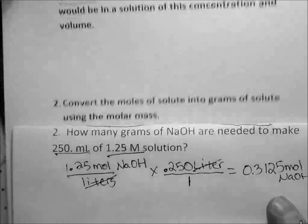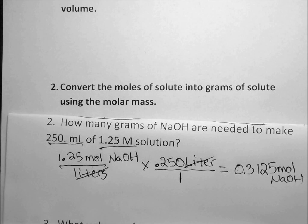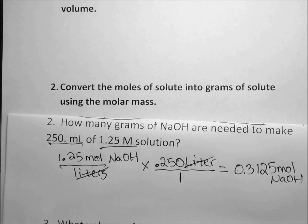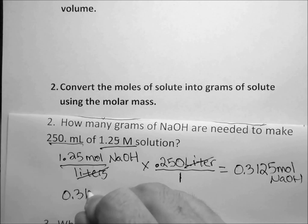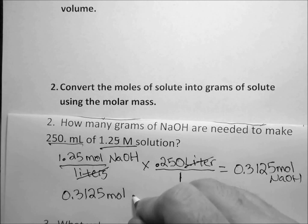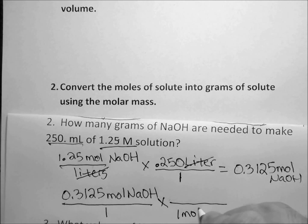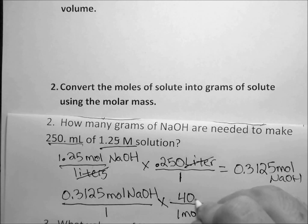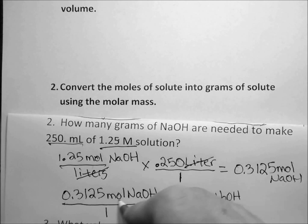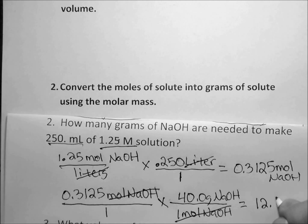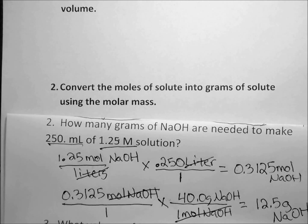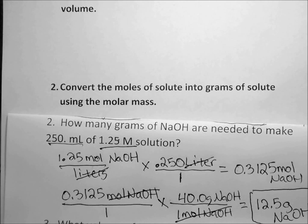The second step is as easy as this — and this is all you have to do to be done. Convert the moles of solute you just calculated to grams. It's just like the mole conversions we've been doing. One mole of NaOH equals 40 grams. Multiply those two numbers together and you are done. That's how you calculate how much solute you need to make this solution.